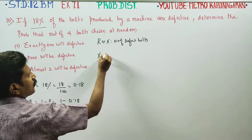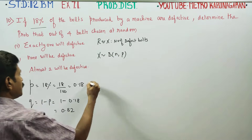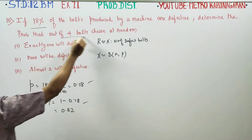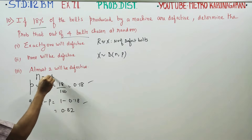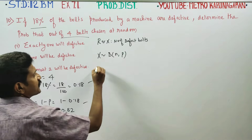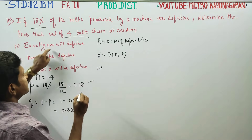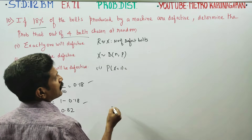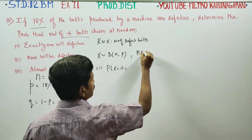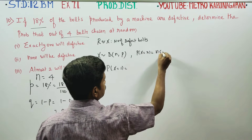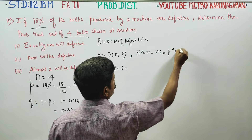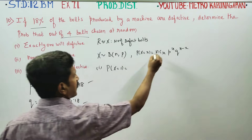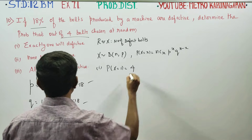X follows binomial distribution with parameters n and p. The formula is P(X = x) = nCx · p^x · q^(n−x), where n and p are the parameters.